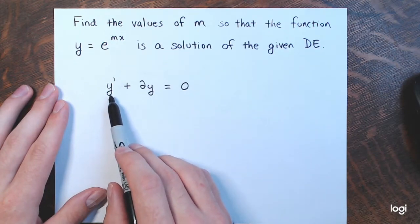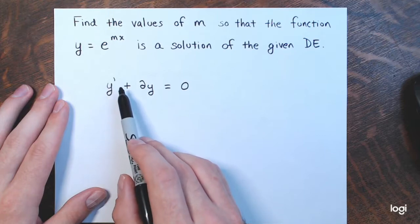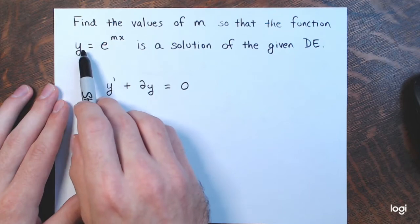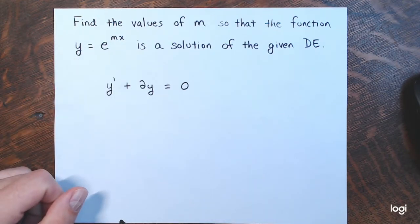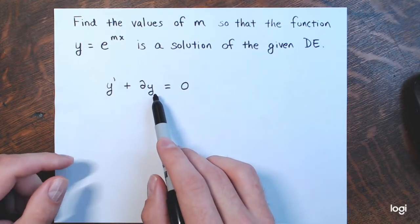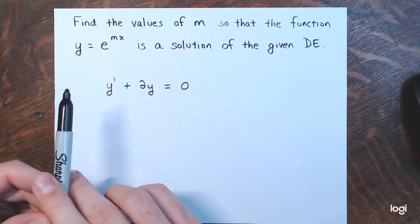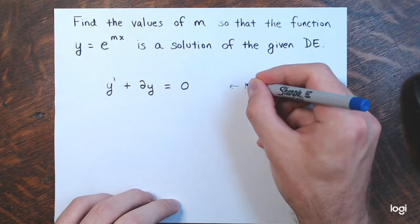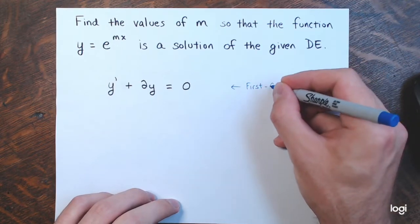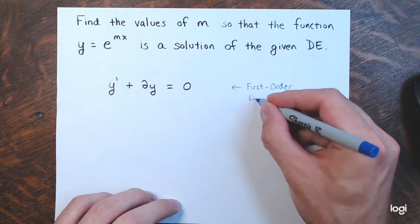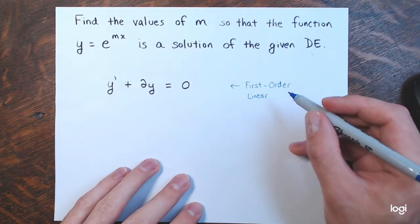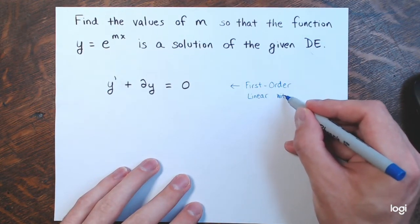The differential equation here is y prime plus 2y equals 0, where y is a function of x. This is a first order linear equation, and something also special about it: it has constant coefficients.